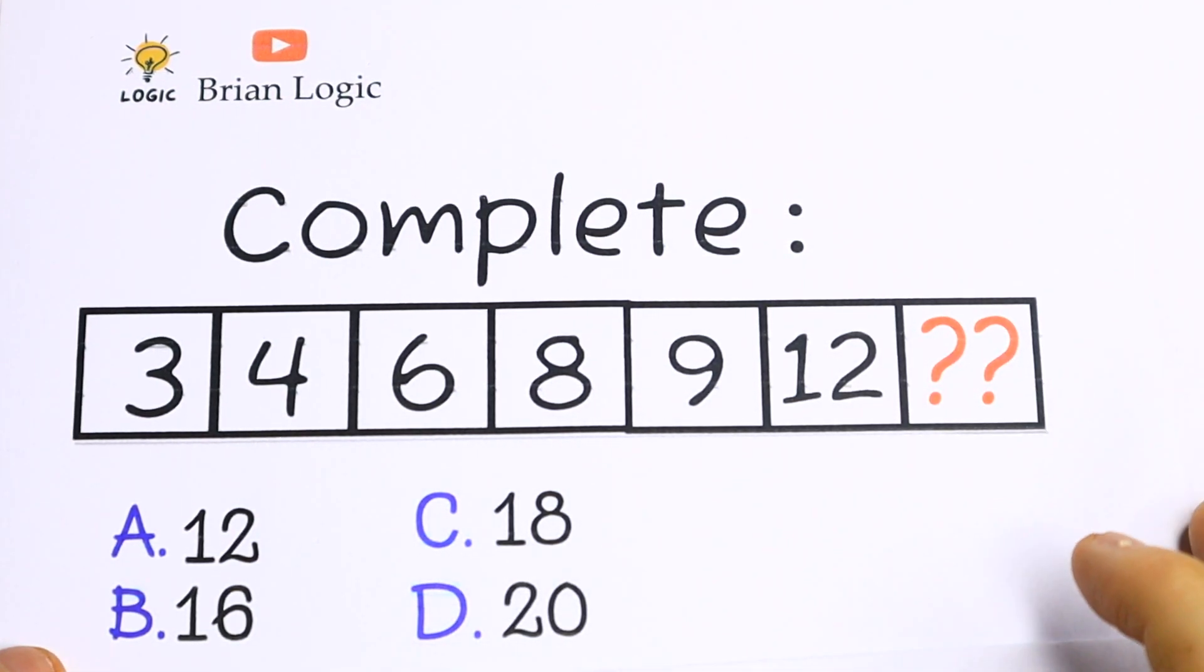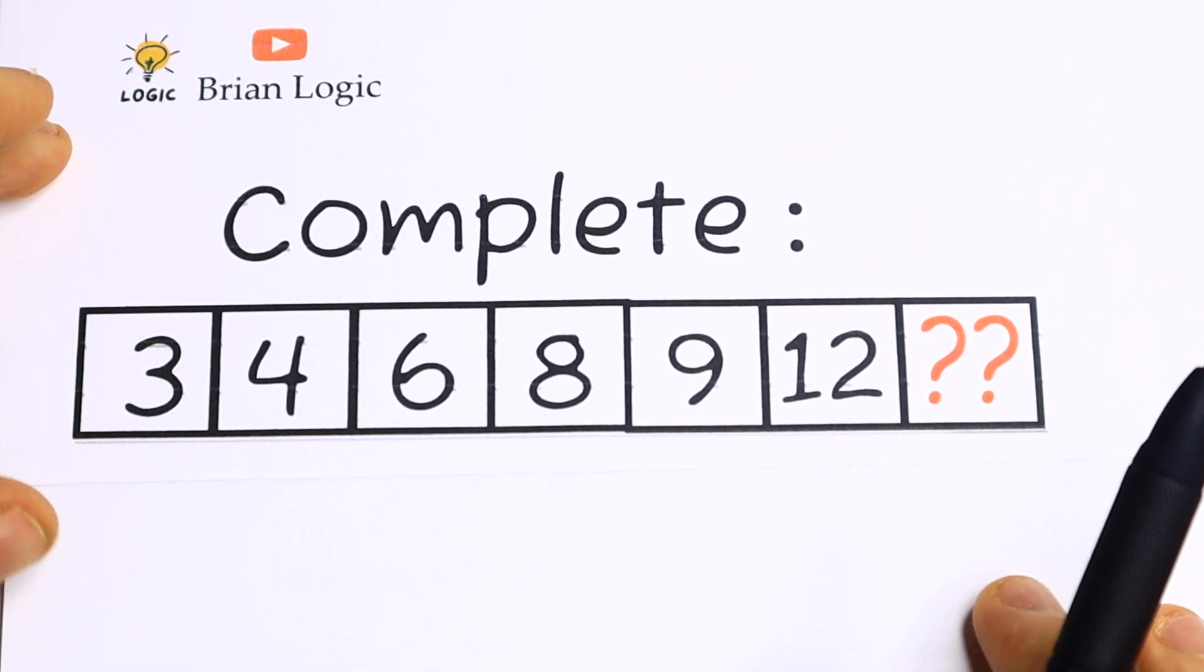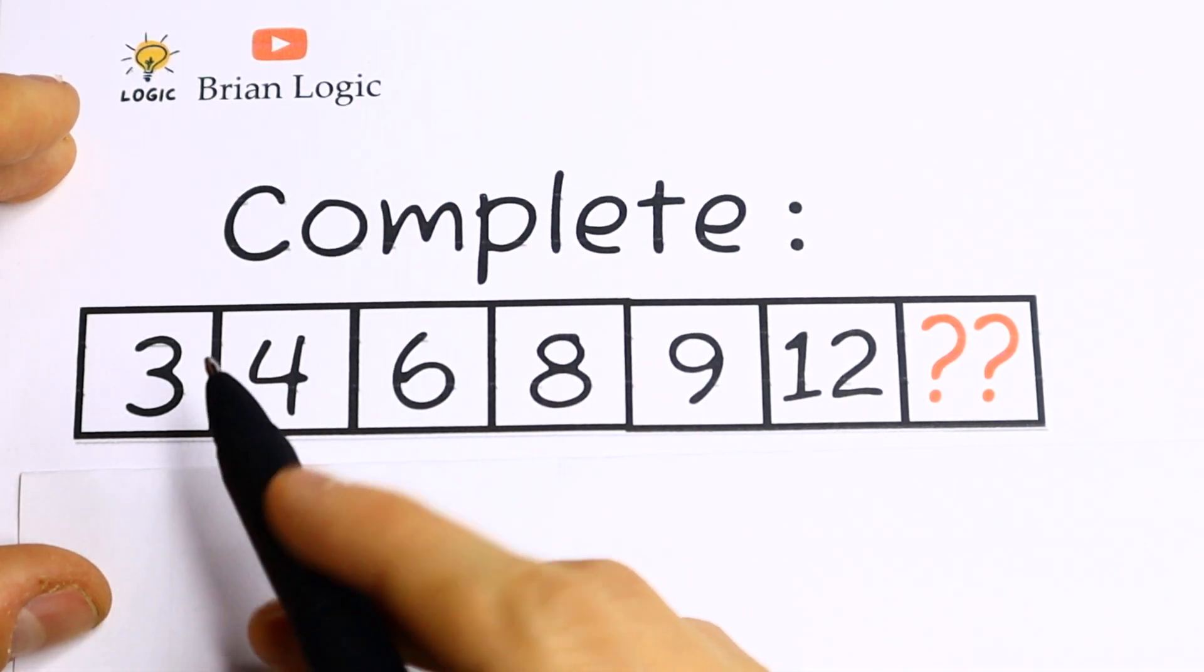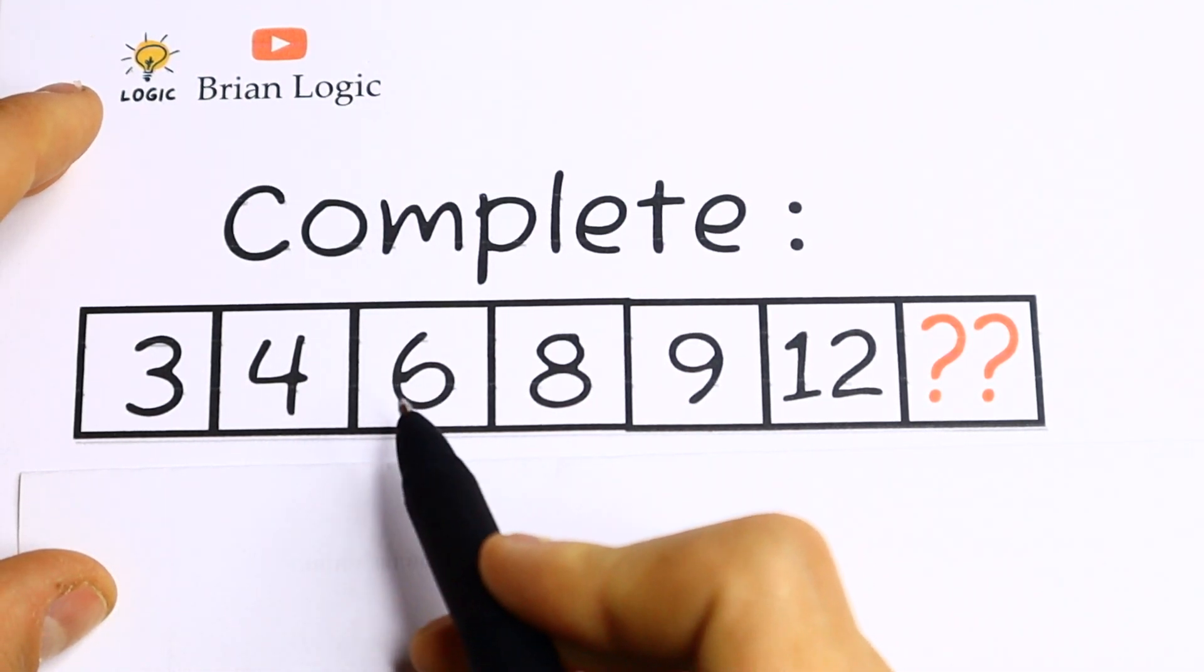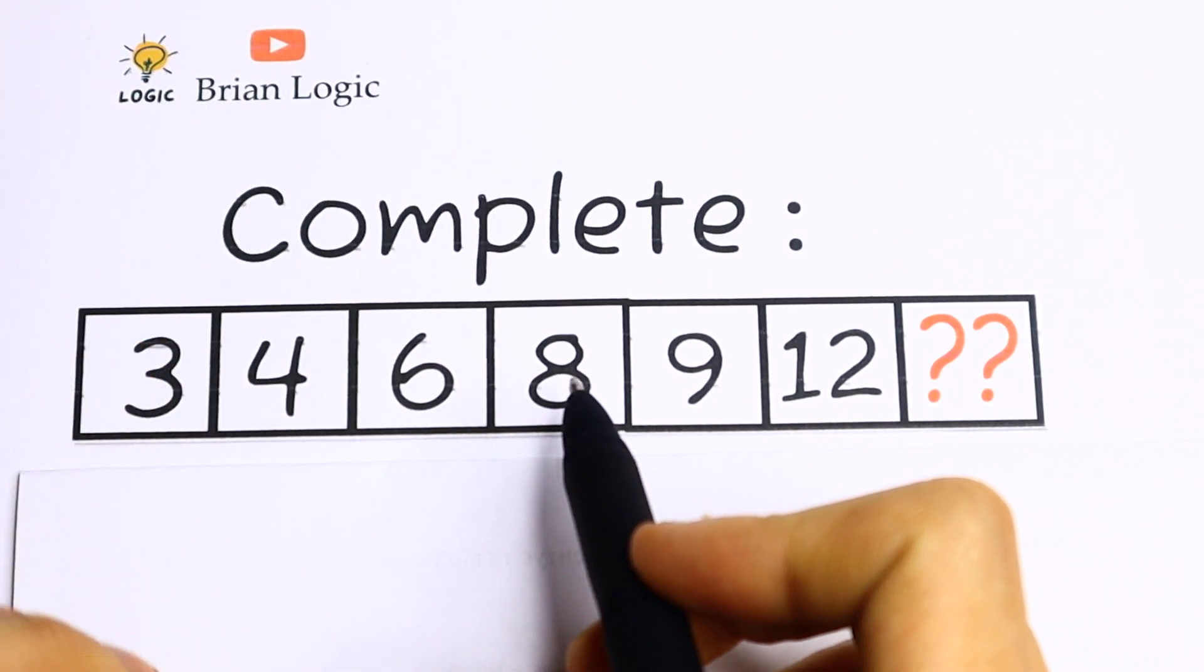Let's try to solve it. As for me, there is no obvious pattern between all of these numbers. We have 3, 4, 6, 8, so for me there is no pattern between all of these numbers.